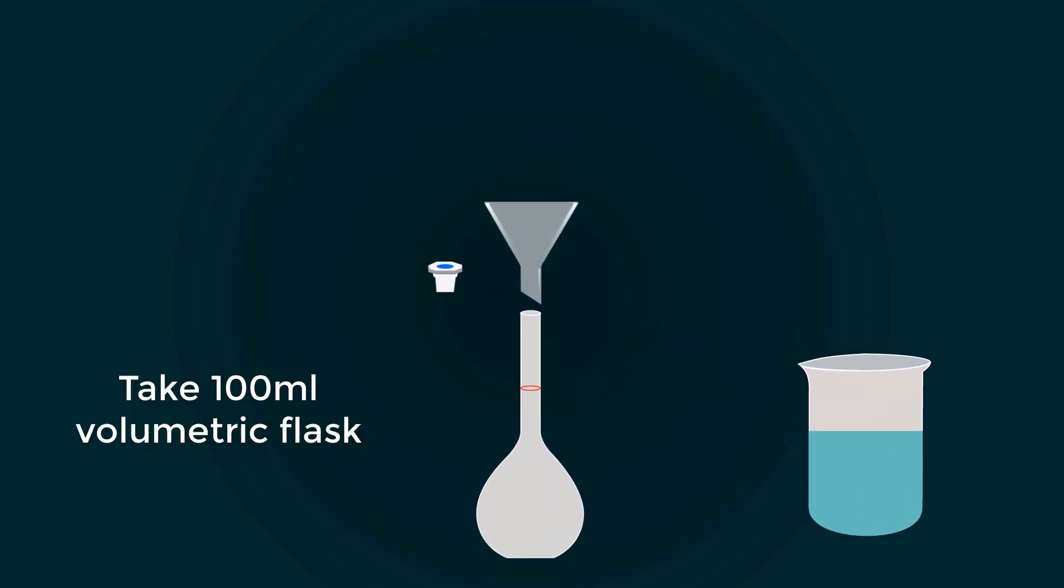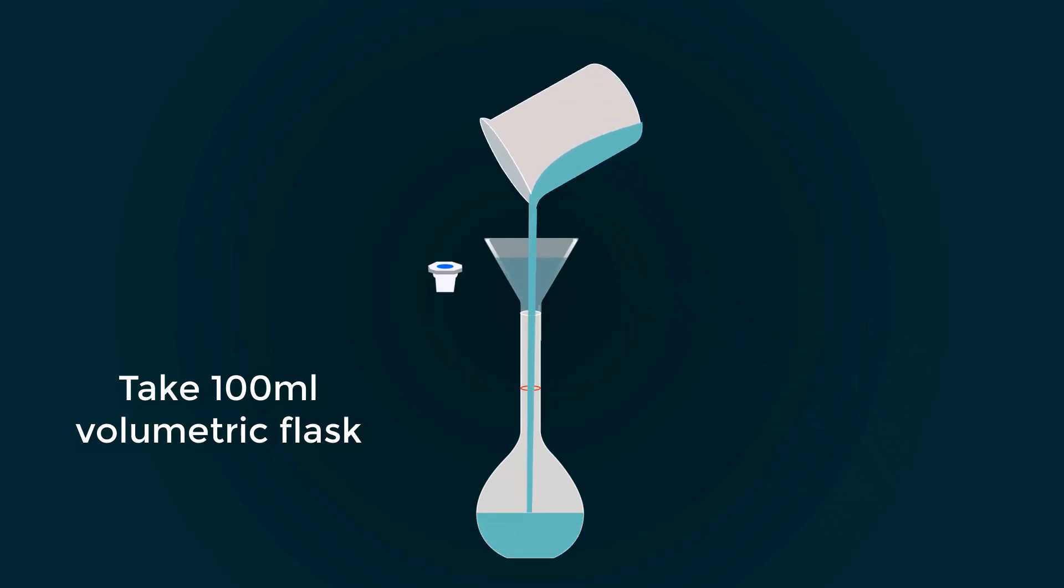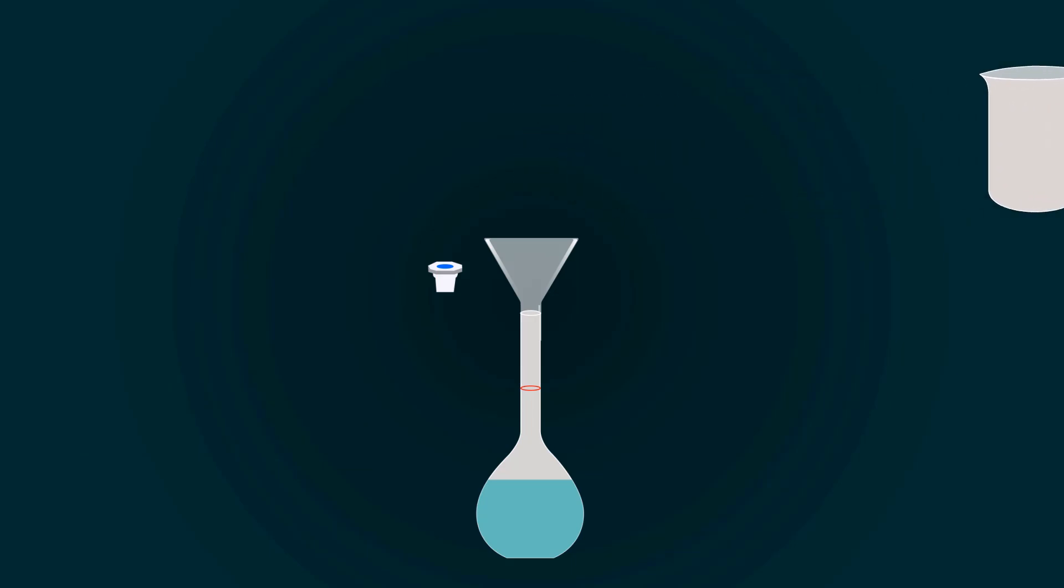Now pour all the solution into the volumetric flask with the help of the funnel. You have to fill the volumetric flask up to the 100 milliliters point. For that, you have to add more distilled water.